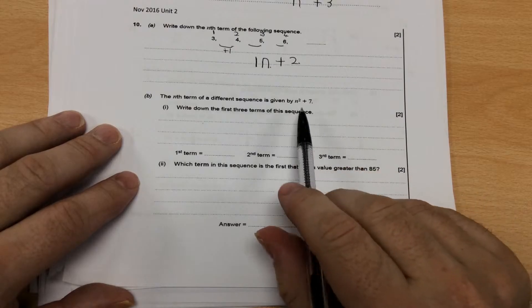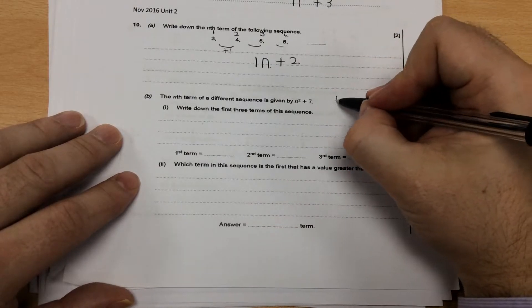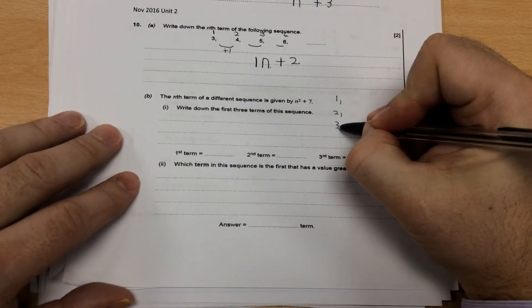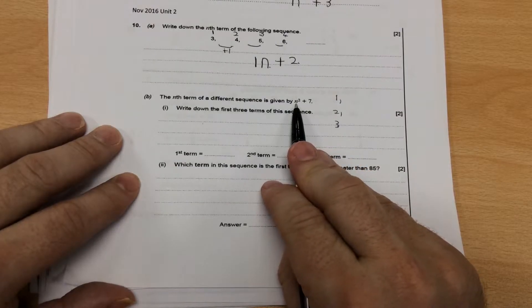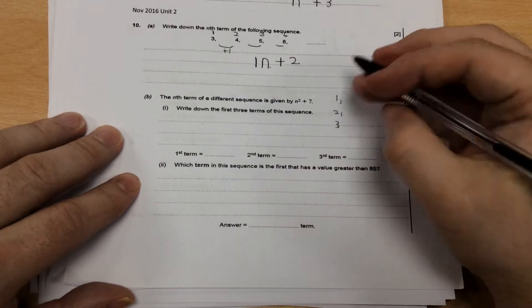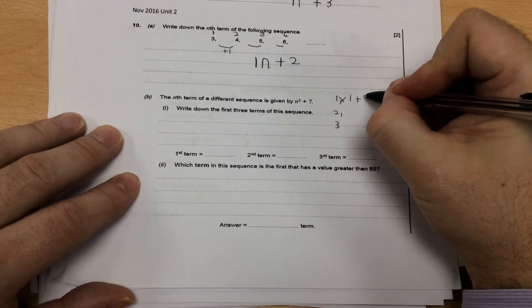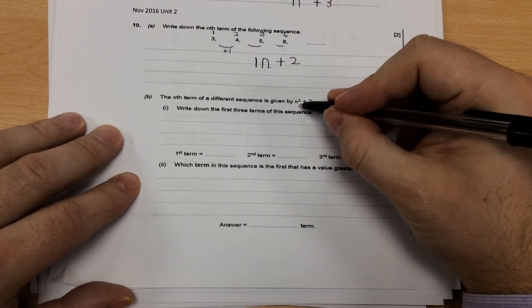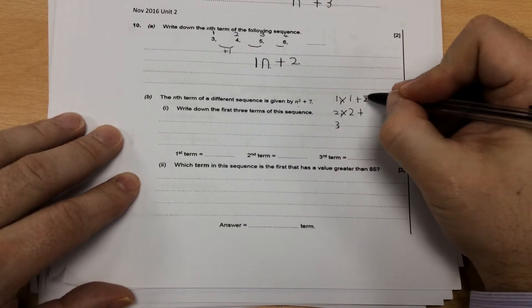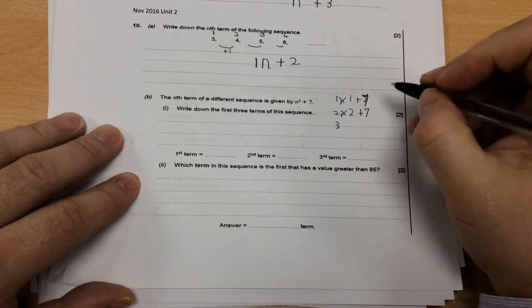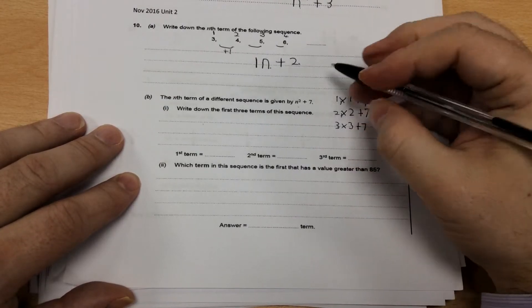The next question, they want us to find the first three terms in the sequence. So, the first one, you're doing something, one times one, add seven. The second term would be two times two, because squared means times itself, add seven. The third term would be three times three, add seven.